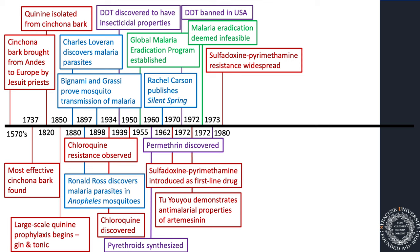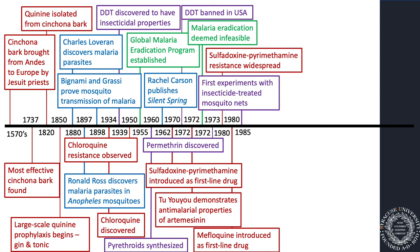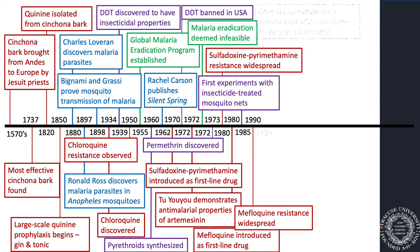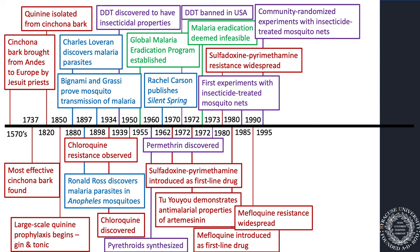Artemisinin was not yet available. Tu Youyou was in China, where the plant that produces artemisinin is native, and there wasn't a lot of interaction with sub-Saharan Africa where most malaria was. Mefloquine was introduced in 1980 but didn't last very long. In 1985, we started the first experiments with insecticide-treated mosquito nets. By 1990, mefloquine resistance emerged and we lost that drug too. In 1995, we did community-randomized experiments with insecticide-treated mosquito nets, developing this new tool to fight malaria.